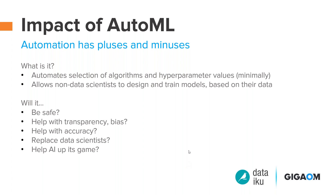AutoML can help with transparency and accuracy if we start building it with those goals in mind. Right now the draw of AutoML is 'point and click, you're done' — it's optimized for efficiency and ease of use. But if we say we're going to use AutoML for certain ends, we'll build it out in a way that is geared towards those things. In other words, it can be used to augment and make things more rigorous rather than simply delegating all the work to it.